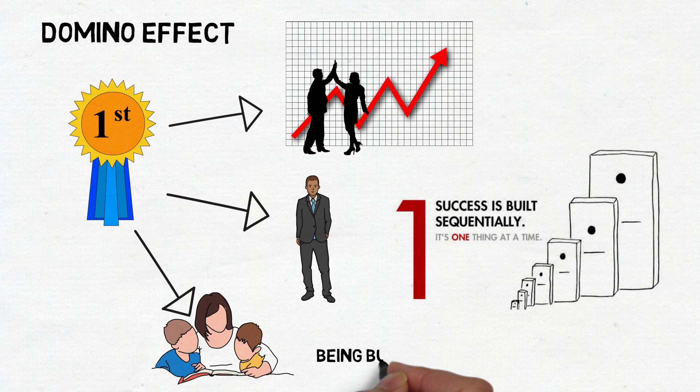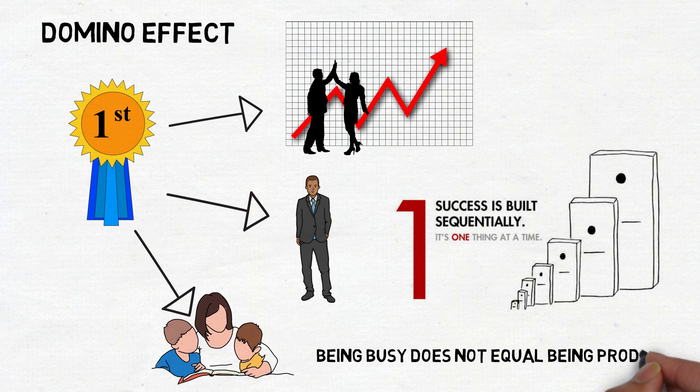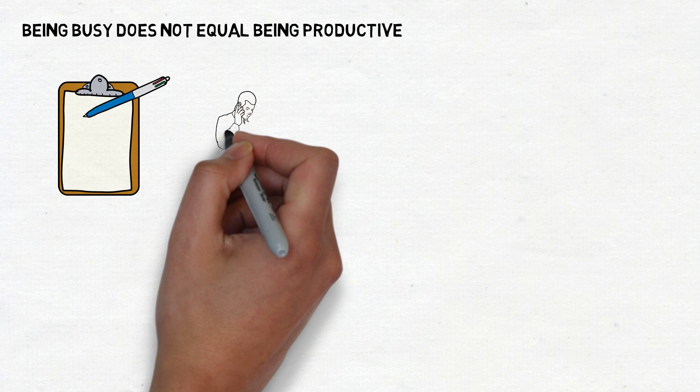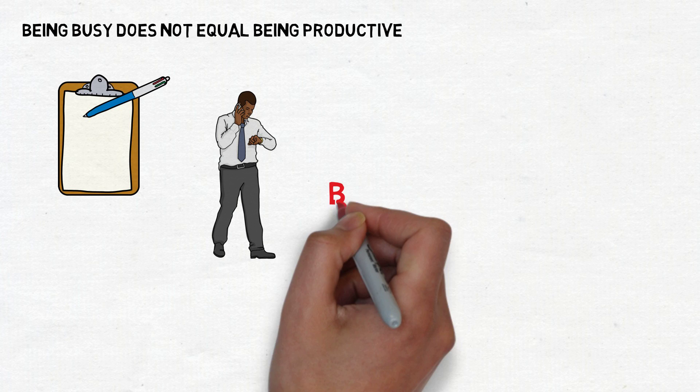Being busy does not equal being productive. Keller tells us we don't need a to-do list, we need a success list—a list purposely designed around your highest priority activities. Before you start each day, narrow your tasks to center around the one most important thing.